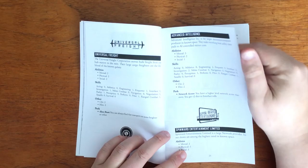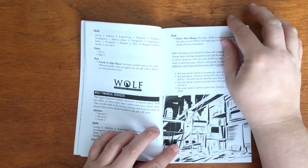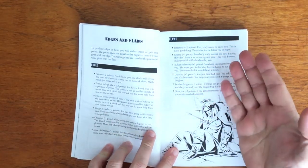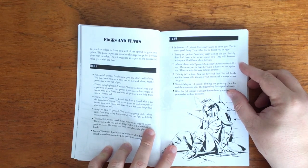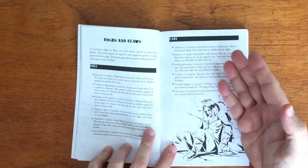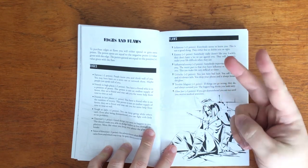Characters can buy edges and flaws. These are bought at the rate of the negative value that a flaw gives you. For example, if you take the infamous flaw, you can gain plus 2 points so you can purchase famous, which costs 2, or charmed and sense of direction, which cost 1 each.